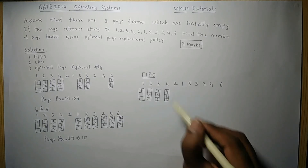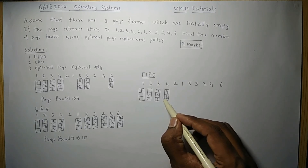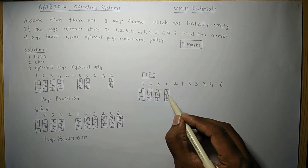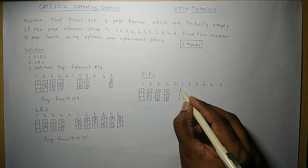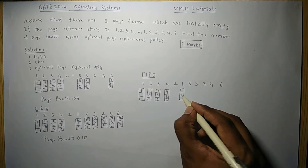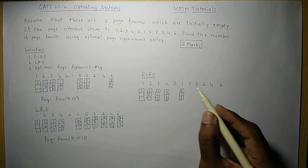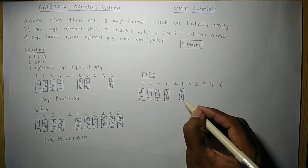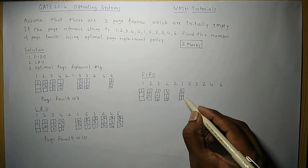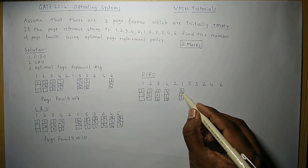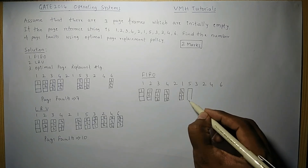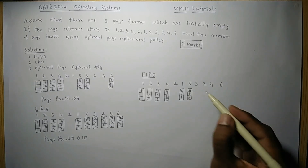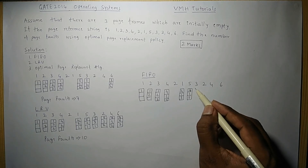The next reference is for page 1, not available — page fault. Of the current pages, page 2 entered first, then page 3, then page 4. So page 2 is replaced with page 1. Pages 4 and 3 remain. The next reference is for page 5 — not available. Page 3 entered first, so page 3 is replaced with page 5. Pages 4 and 1 remain.